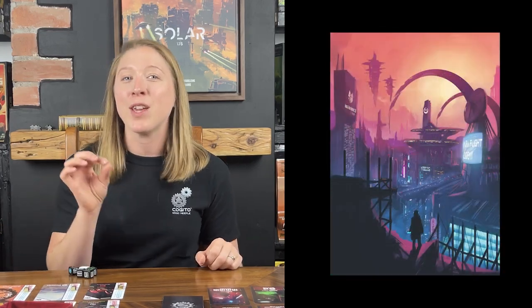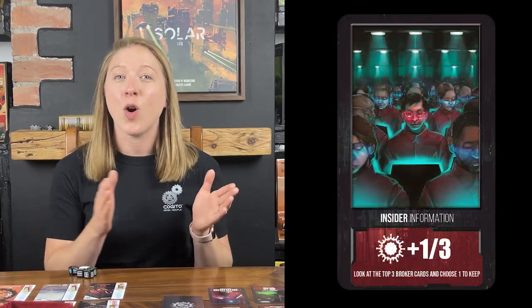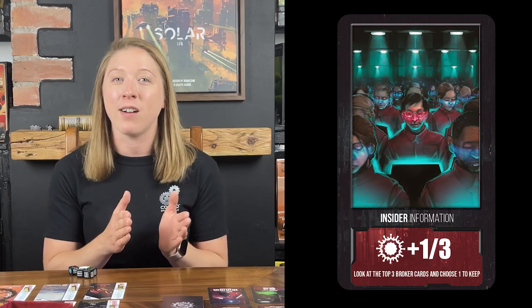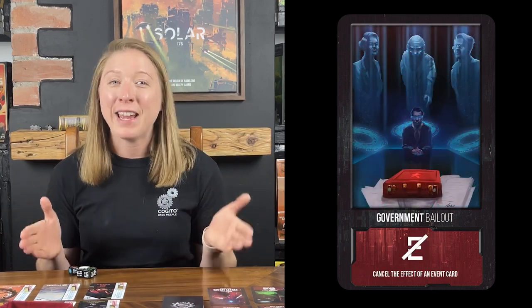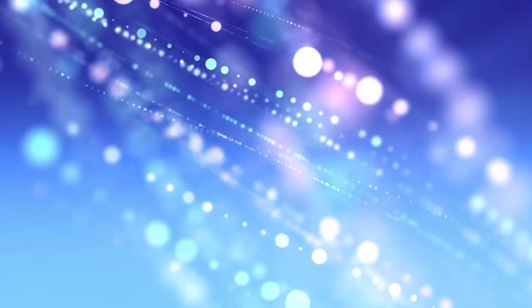The broker cards each have unique powers on them and need to be thematic with their unique works of art. As such, we placed the actions of each card in the same place on every card, and every card has a unique symbol and a brief explanation of its power. There are only 14 of these cards in the game, so this doesn't become overwhelming. And the more you play, the less players use the text and the more they use the iconography.